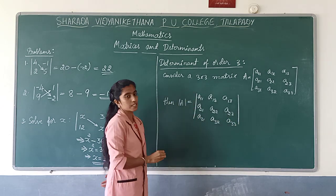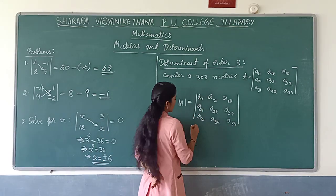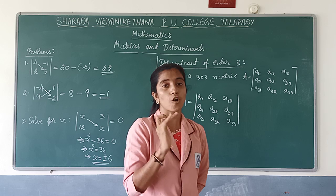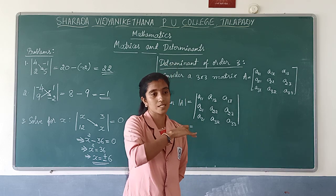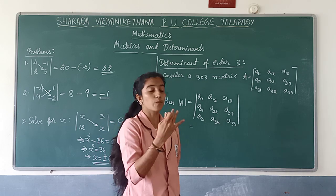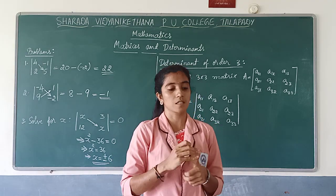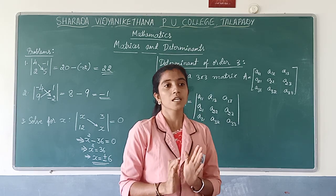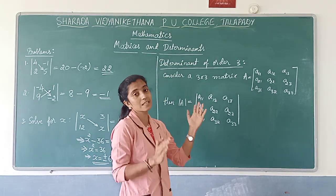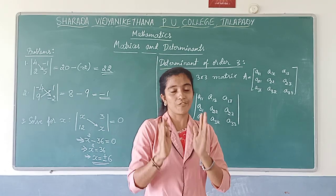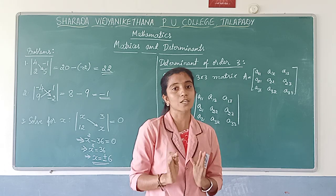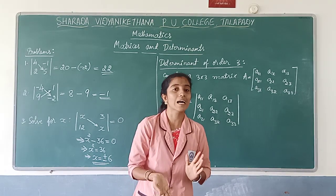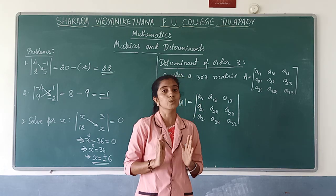The calculation for order-3 is very important because this is used in finding the inverse of a matrix. In the matrix method, which we will study further, we find the inverse of a given matrix, and finding the determinant of that matrix is one part of that process. So we must know the determinant of order 3; for the matrix method, questions are asked for order 3, not order 2.